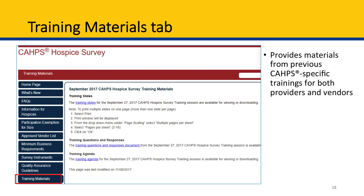The last tab we'll cover is the Training Materials page. This page provides materials from previous CAHPS-specific trainings for both providers and vendors. Providers who want to refer back to a training or who missed a live training event can find all training resources from that event here.